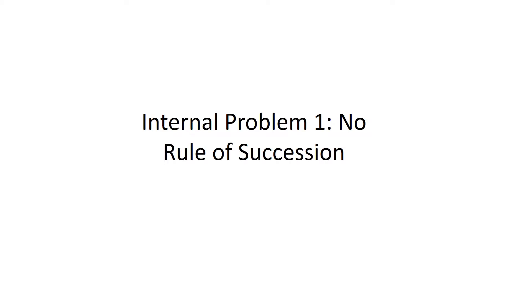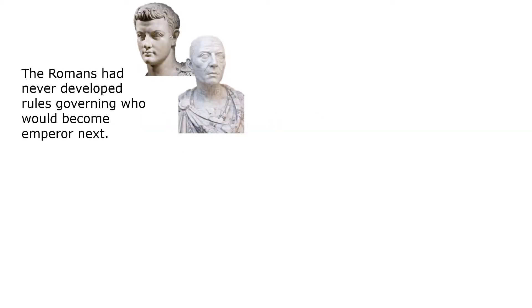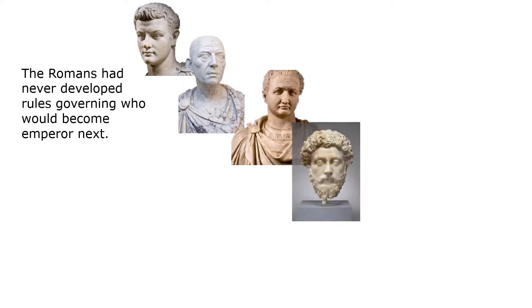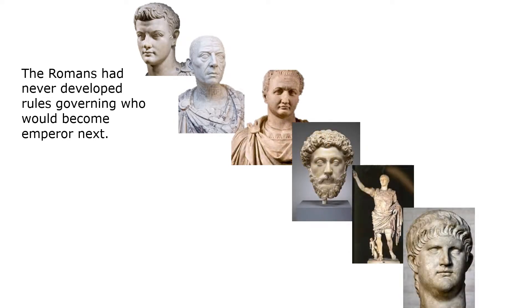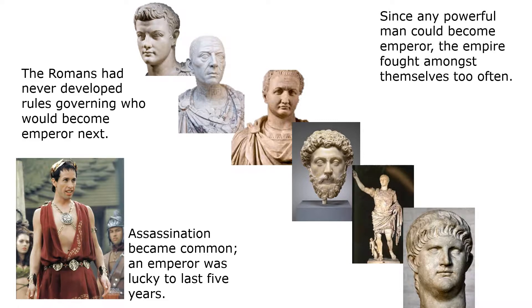We're going to look at the internal problems first. Internal problem number one was there was no rule of succession. This meant the Romans had never developed rules governing who would become emperor next. Assassination became common, and an emperor at one time was lucky to last five years. Since any powerful man could become emperor, the empire fought amongst themselves too often. Civil wars weakened the empire.